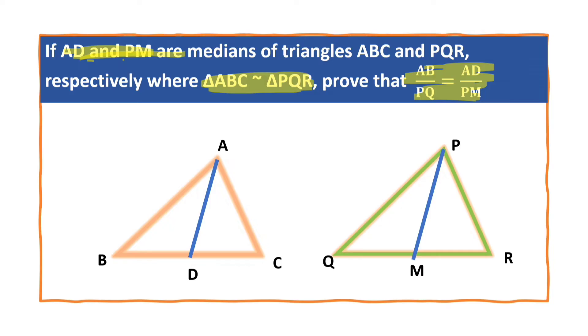The triangles involved in the ratio are triangle ABD and triangle PQM. In order to prove AB by PQ is equal to AD by PM, we have to prove triangle ABD is similar to triangle PQM. Now let us prove.